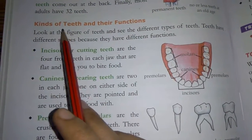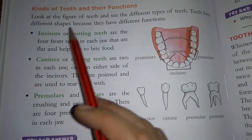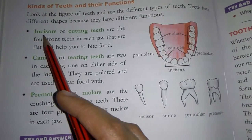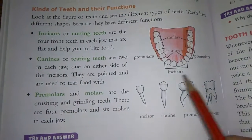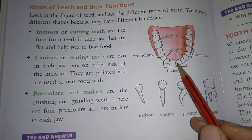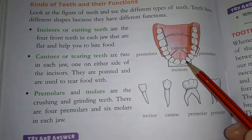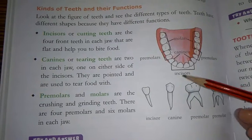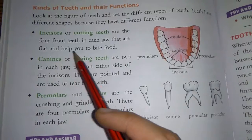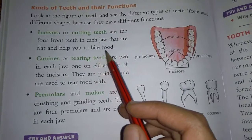Now we will learn the kinds of teeth and their functions. Teeth are of very different types and different shapes. The first type is the incisor, also called cutting teeth. This is a picture of incisor teeth, which are at the front. There are four incisors in each jaw — upper and lower — and they are flat and help you to bite food.